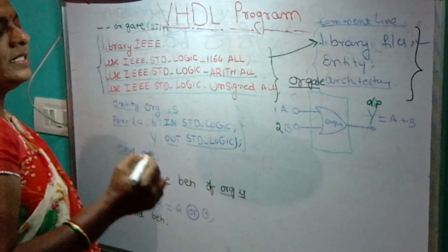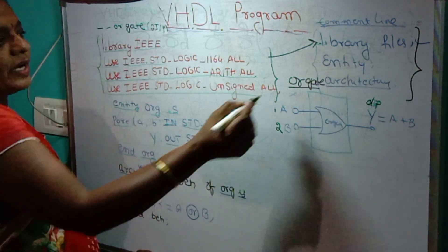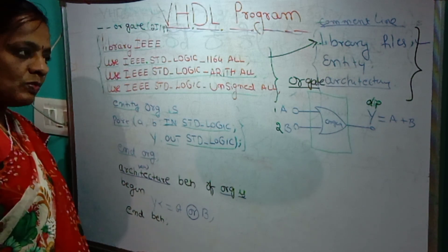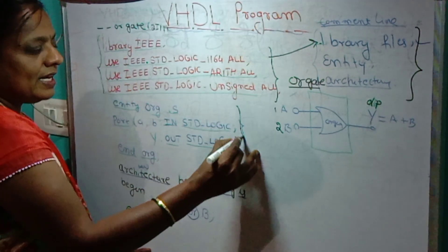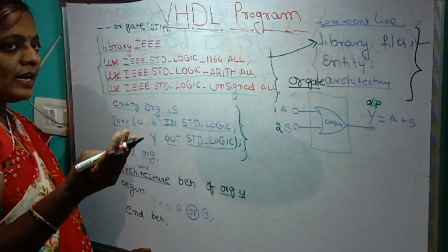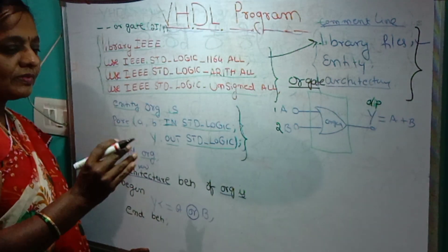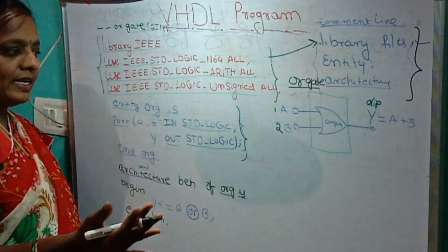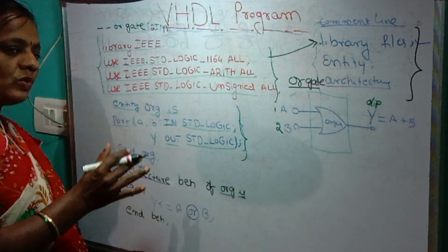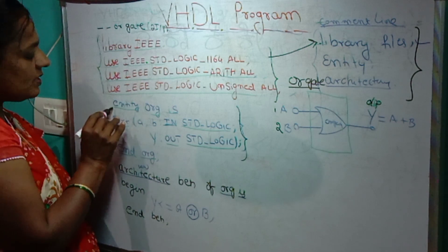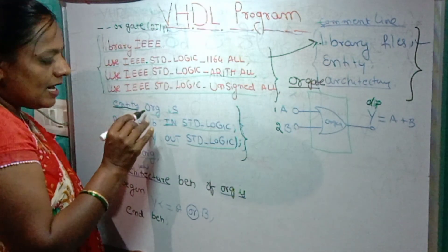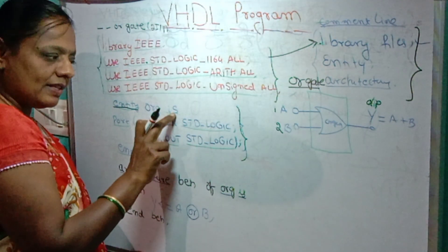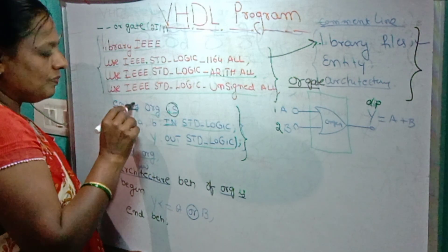Next we are going to write the entity part. The entity part declares how many inputs and how many outputs are in your program. The entity begins with the keyword 'entity', followed by the name of the entity, then the keyword 'is'. Here 'entity' and 'is' are keywords, and the name of the entity is user-defined.